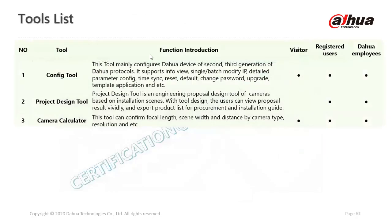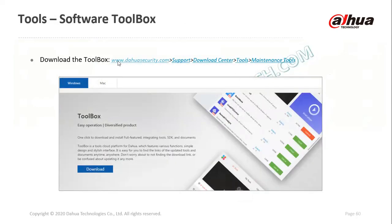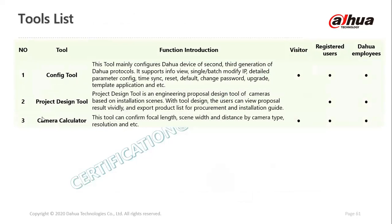Hardware tools include a drill and a cable tester. For software, the key tools are the config tool, project design tool, and camera calculator. The config tool is used to identify and locate most Dahua products, change IP addresses, and do parameter configuration. The project design tool is used to create proposals for clients and make good designs — it creates a visual of how cameras will appear in the project. We will do a dedicated session on the project design tool later.